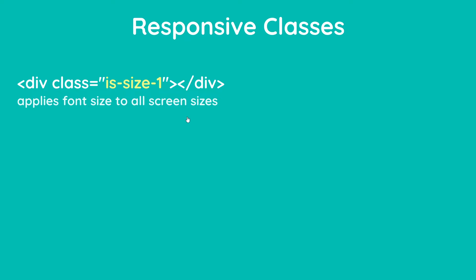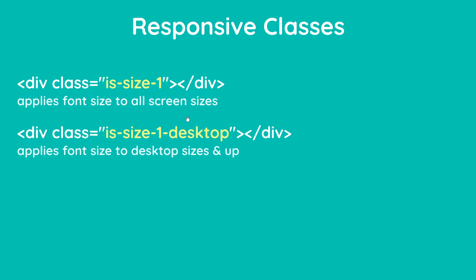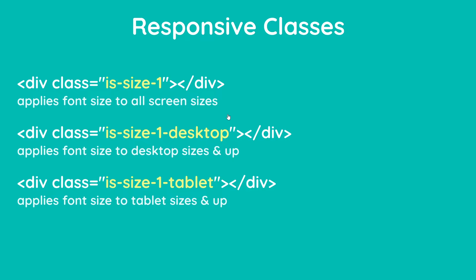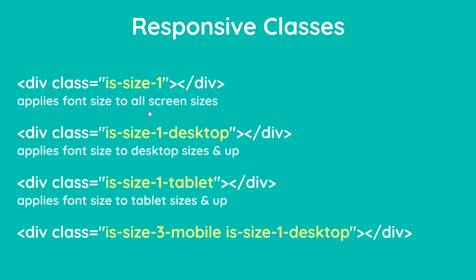But if I add `is-size-1-desktop` it will only apply that font size at desktop sizes and up. If I instead use `is-size-1-tablet`, it's going to apply that font size to tablet sizes and up, desktop included. I can also add different values for different screen sizes — something like `is-size-3-mobile` to apply this font size to mobiles and up, but then when it reaches desktop it's going to be `is-size-1` for that size screen and up.